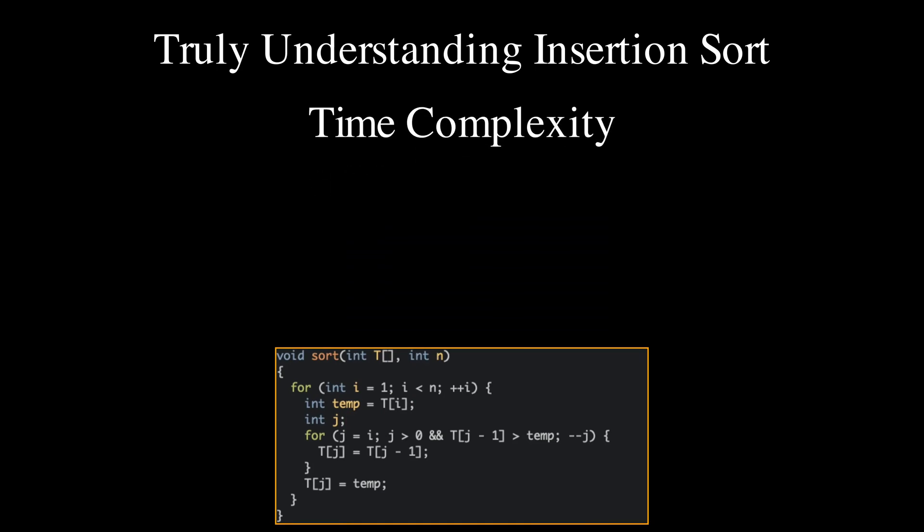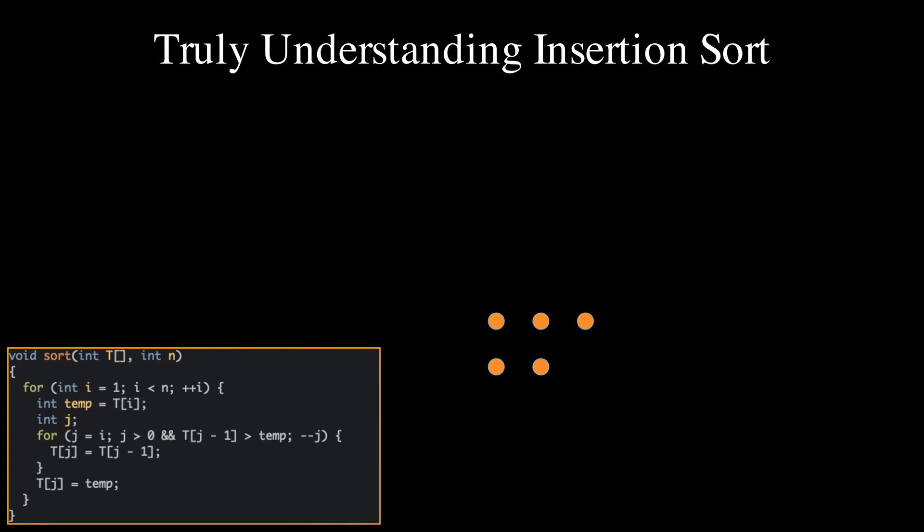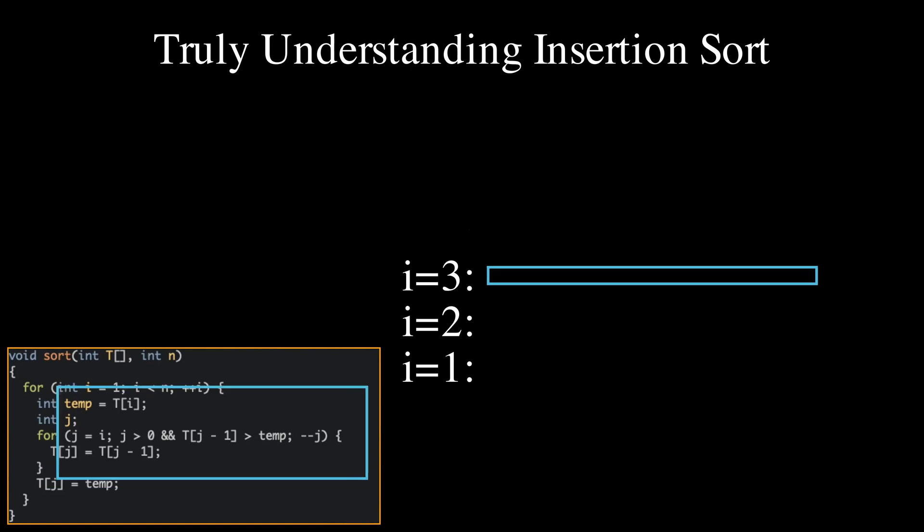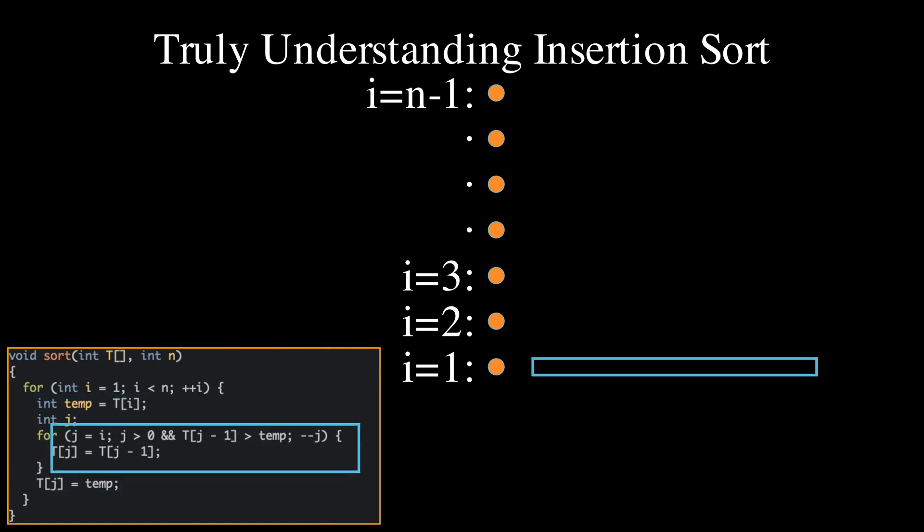Let us now try to understand the time complexity of insertion sort. Insertion sort has a worst case time complexity of big O of n squared. This can be seen by using a simple graphical argument. We will place a dot for each unit of time taken by the algorithm, and then count the dots to obtain the time complexity. In the outer loop, the index i goes from 1 up to n minus 1. We will represent the running time used for each iteration of the outer loop on its own line for each value of the index i. The two declarations and the last assignment in the body of the outer loop take a constant amount of time. To account for this, we place a dot for each iteration of the outer loop. It remains to add dots corresponding to the inner loop for each iteration of the outer loop.